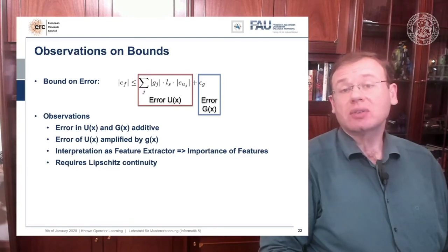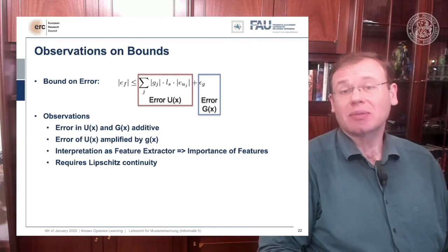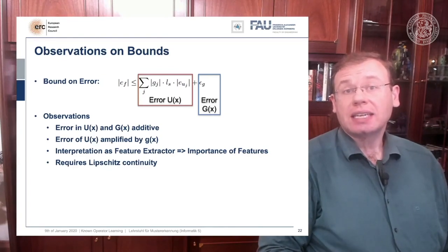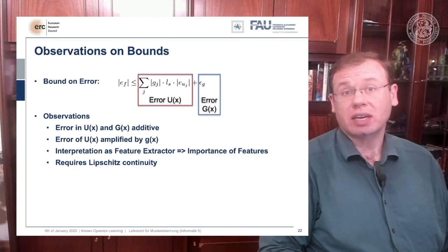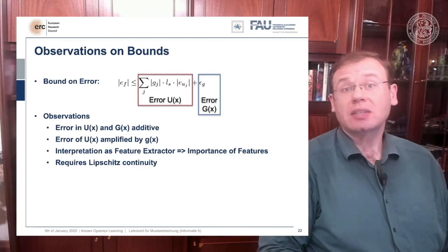And this also gives us hints why in classical pattern recognition there was this very high focus on the feature extraction, because any feature that you don't extract correctly, that is simply missing. And this is also a big advantage of our deep learning approaches, that we can also optimize the feature extraction with respect to the classification.